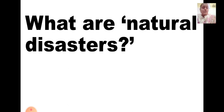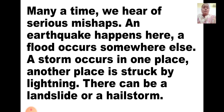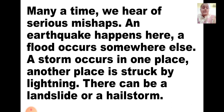Now what are natural disasters? Many a time we hear of serious mishaps. An earthquake happens here, a flood occurs somewhere else, a storm occurs in one place, another place is struck by lightning, there can be a landslide or a hailstorm. Sometimes we hear in the news that in some place an earthquake has occurred, a flood has occurred, or another place has been struck by lightning, or there was a landslide or a hailstorm. All these are natural calamities.